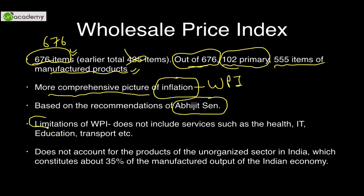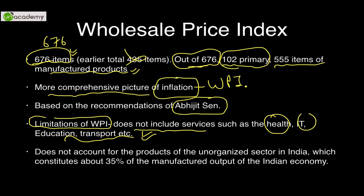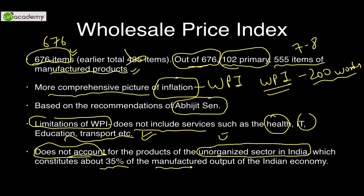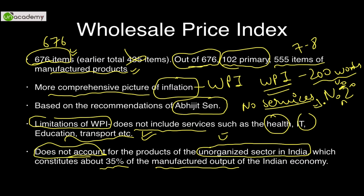WPI has limitations. First, it does not include services such as health, education, and transport — an extremely important point. Second, it does not account for the unorganized sector, which contributes roughly 35% of total manufactured output. So in summary: no services and no unorganized sector involvement.